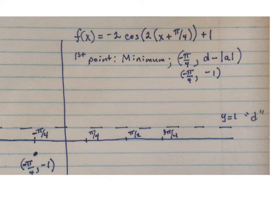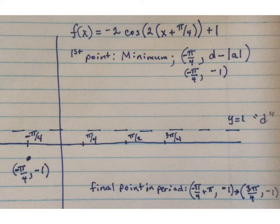Our first point will be at the x value that we determined for our horizontal shift, which was negative π over 4, will be our x coordinate. But remember, the y coordinate is going to be at a minimum value, and therefore we're just going to take our d value and subtract the absolute value of a, or 2, which would give us negative 1. Our first point is at negative π over 4, negative 1.